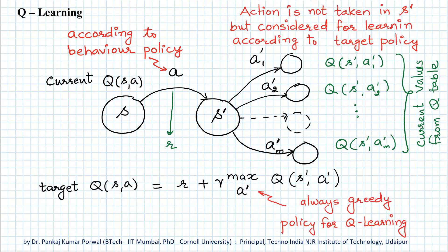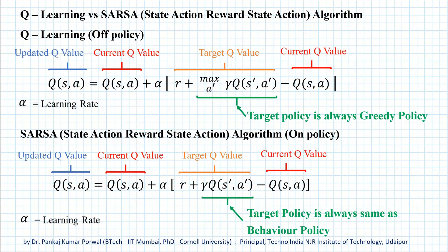Whereas in Q-Learning, we were taking the maximum with respect to A' of the action value. If we look at the update equations for Q-values in Q-Learning and SARSA, the only difference is in one term: in Q-Learning, we have the maximum with respect to action A' in state S', whereas in SARSA, we have just the Q-value corresponding to action A' which is determined by the behavior policy in state S'.